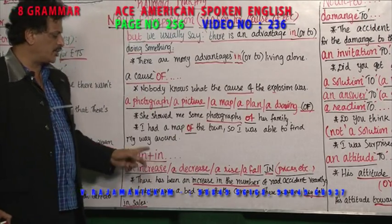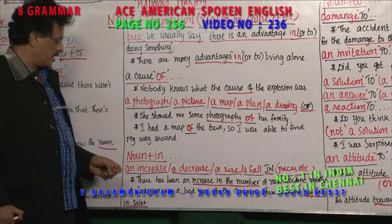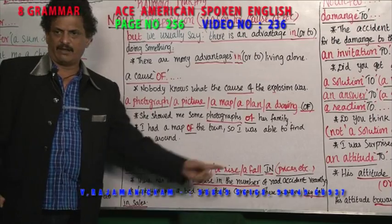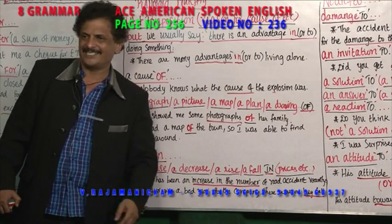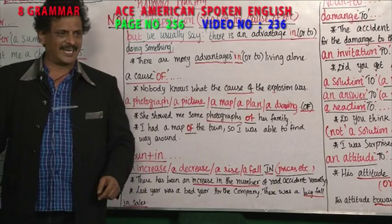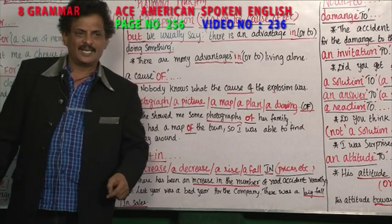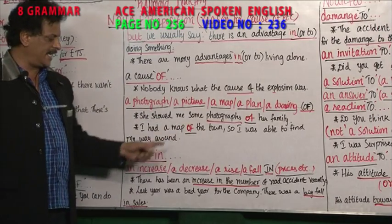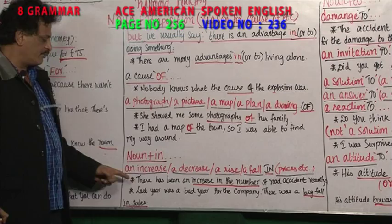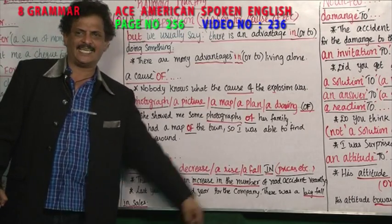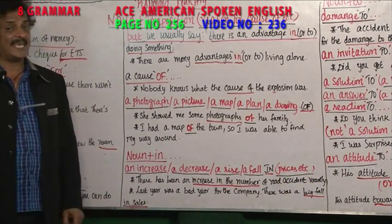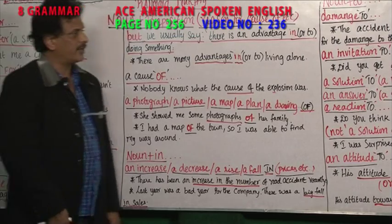Now noun plus in: an increase in, a decrease in, a rise in, a fall in prices. Increase, decrease, rise, fall — all used with the preposition 'in'. An increase in my salary, a decrease in the prices of potato. There has been an increase in the number of road accidents recently. Last year was a bad year for the company — there was a big fall in sales.